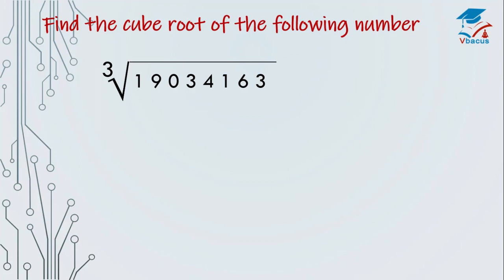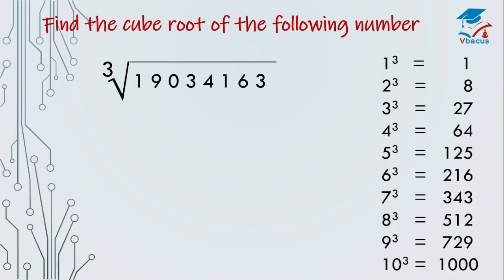Example 1: find the cube root of 19034163. First, we have to learn the chart. Cube of 1 is 1, cube of 2 is 8, cube of 3 is 27, cube of 4 is 64, cube of 5 is 125, cube of 6 is 216, cube of 7 is 343, cube of 8 is 512, cube of 9 is 729, cube of 10 is 1000. We can see the unit place — not a single digit is repeating; only 0 to 9 digits are there.